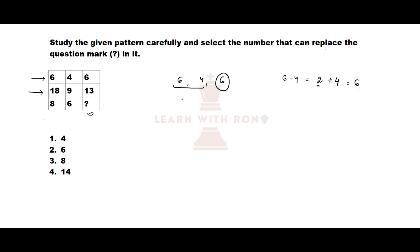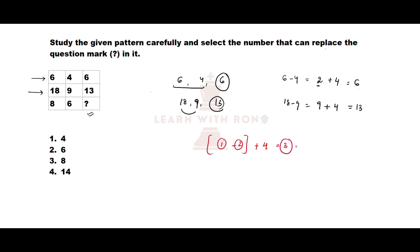Checking the second row: 18, 9, and 13. The difference of 18 and 9 is 9. Adding 4 gives 13, which is the third number. So the pattern is: (first number − second number) + 4 = third number. For the third row: first number is 8, second is 6. So 8 − 6 = 2, and 2 + 4 = 6. The answer is 6, which is option number 2.